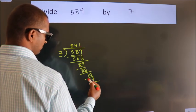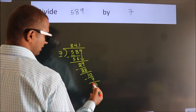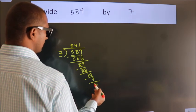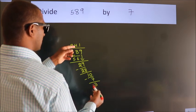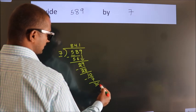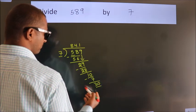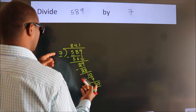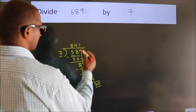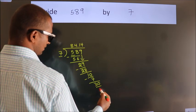Now we subtract and get 3. After this, we already have the decimal, so directly take 0. So we have 30. A number close to 30 in the 7 table is 7 times 4, which is 28.